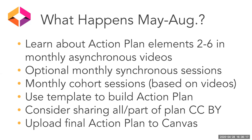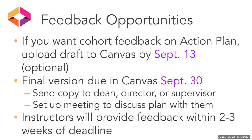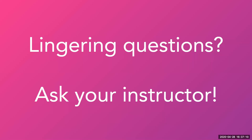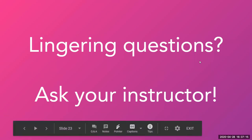Finally, you'll upload your final action plan to Canvas. If you want feedback from your cohort on your action plan draft, please upload a draft to Canvas by September 13th — it's totally optional. The final version is due September 30th. Please also send a copy to your dean, director, or supervisor and set up a meeting to discuss the plan with them, ideally in October. Instructors will provide feedback within two to three weeks of the deadline. If you have any lingering questions, ask your instructor or post to the open discussion for all cohorts in Canvas. Thanks for listening and good luck with your plan.